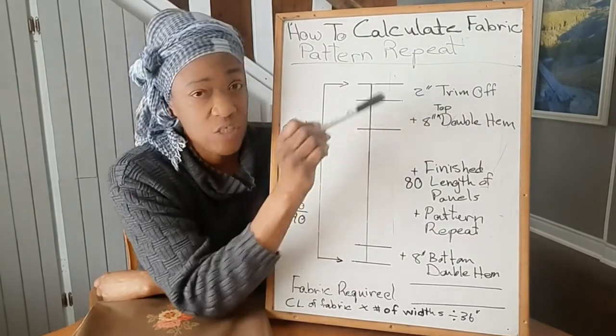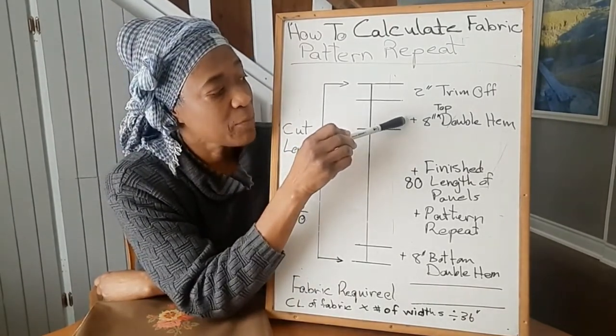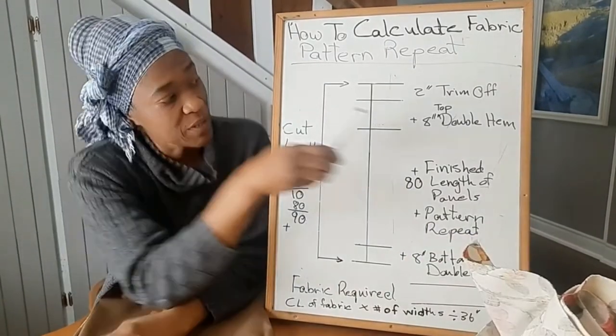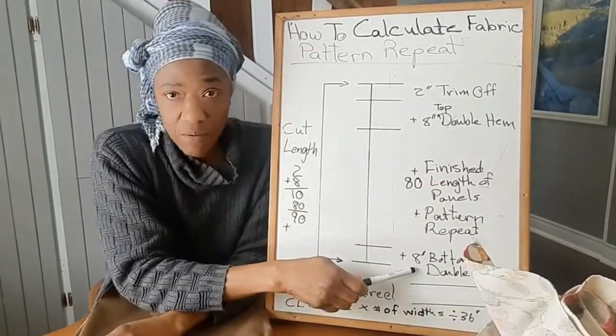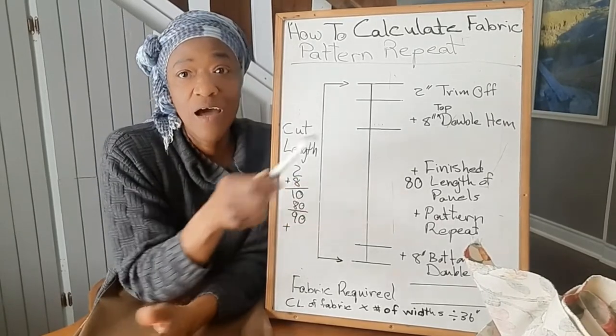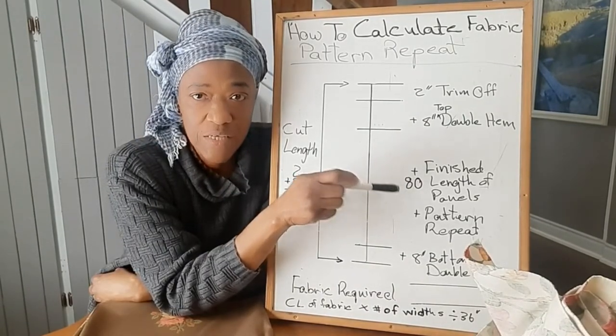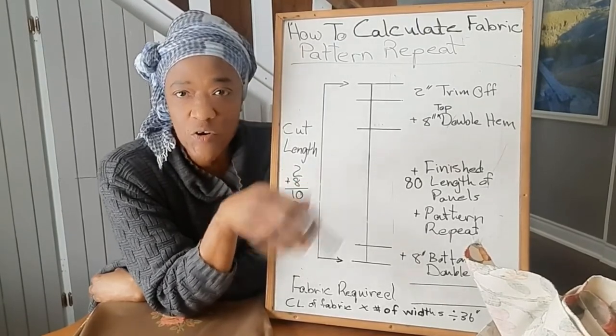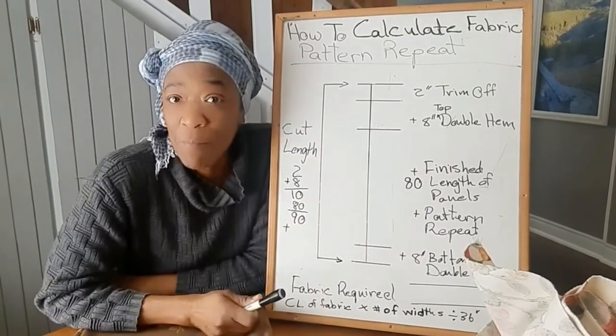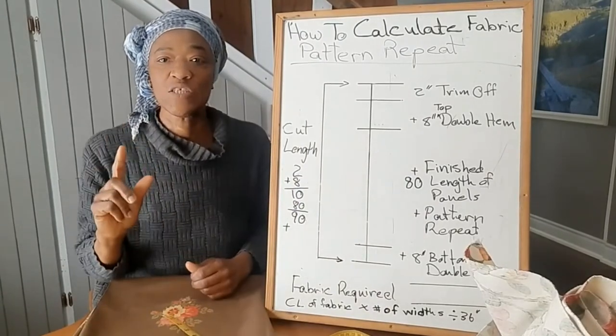The first number is two inches, and that's usually for your trim off wastage. The next number is eight inches, that is for your top double hem. So there is a top double hem of eight inches and there's a bottom double hem of eight inches. Plus there is 80 inches, I'm using 80 inches as an example. Now your 80 inches here is your finish length. Finish length means that your curtain is done, it's ready to be hung.